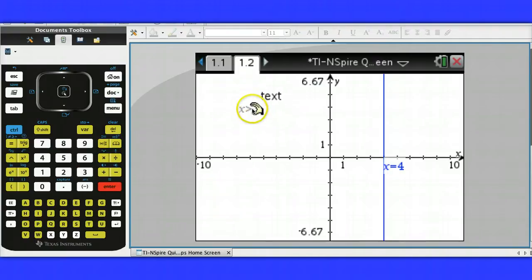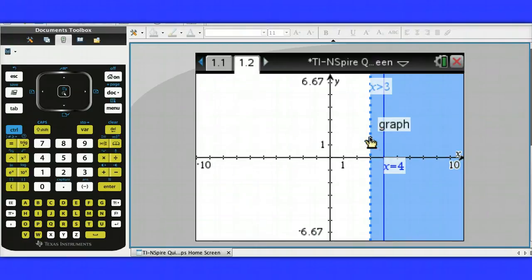And that doesn't look like it's done anything, but once I drag it to the x-axis, it'll graph and shade, notice the dotted line here, x greater than 3.